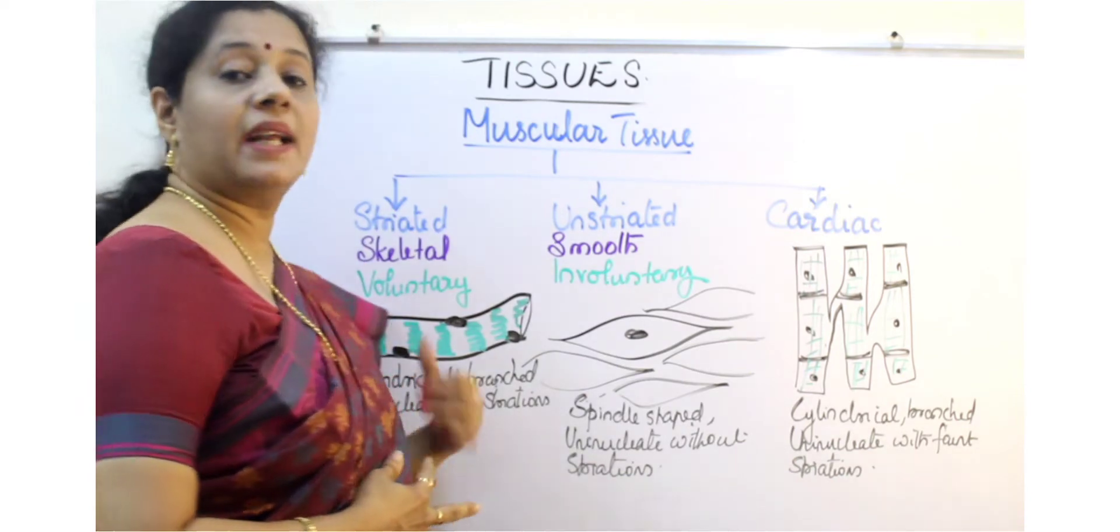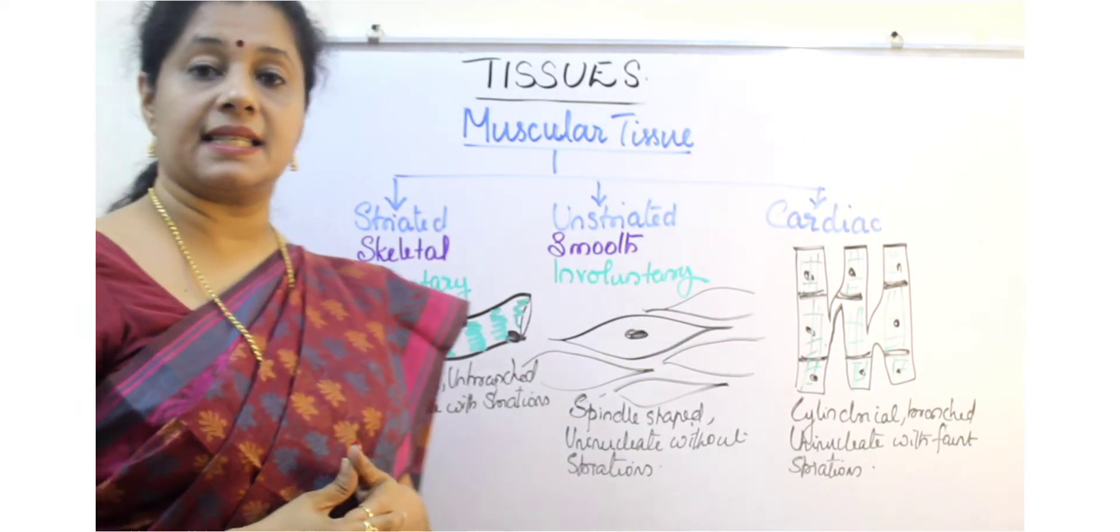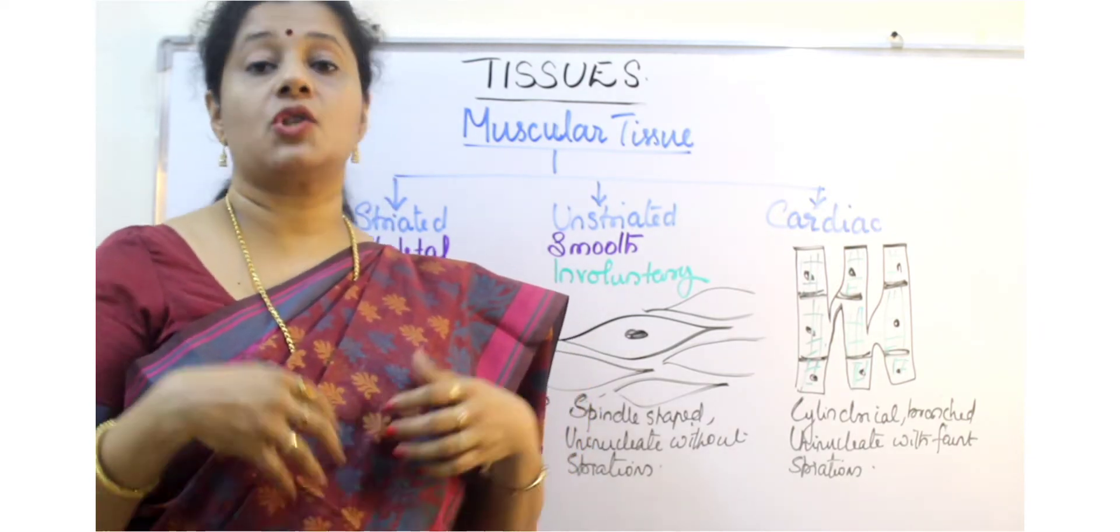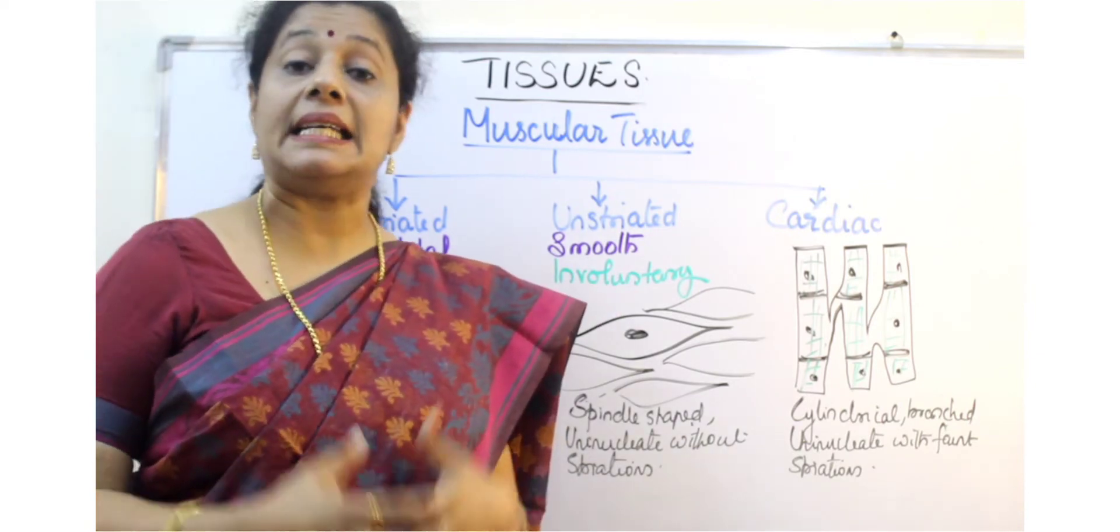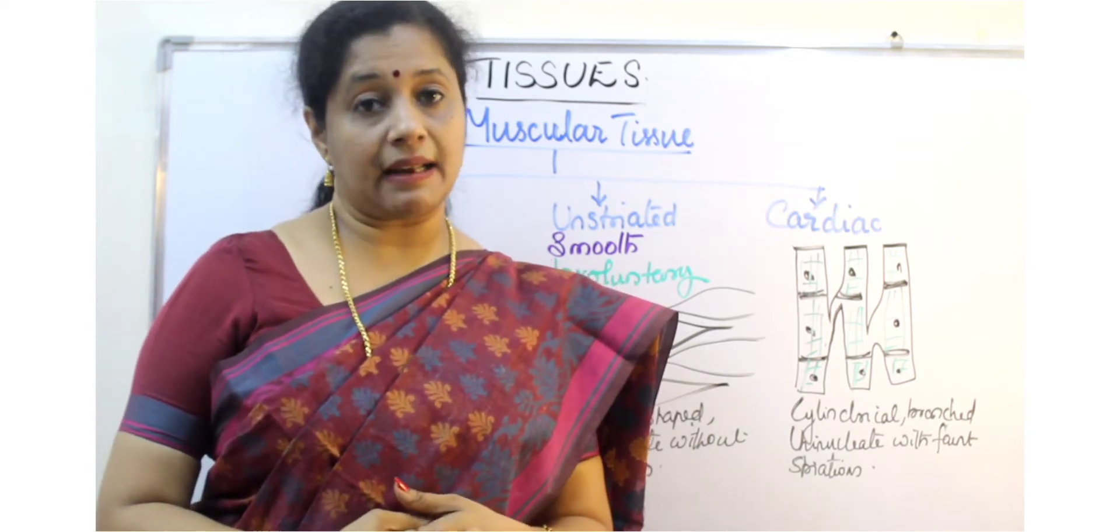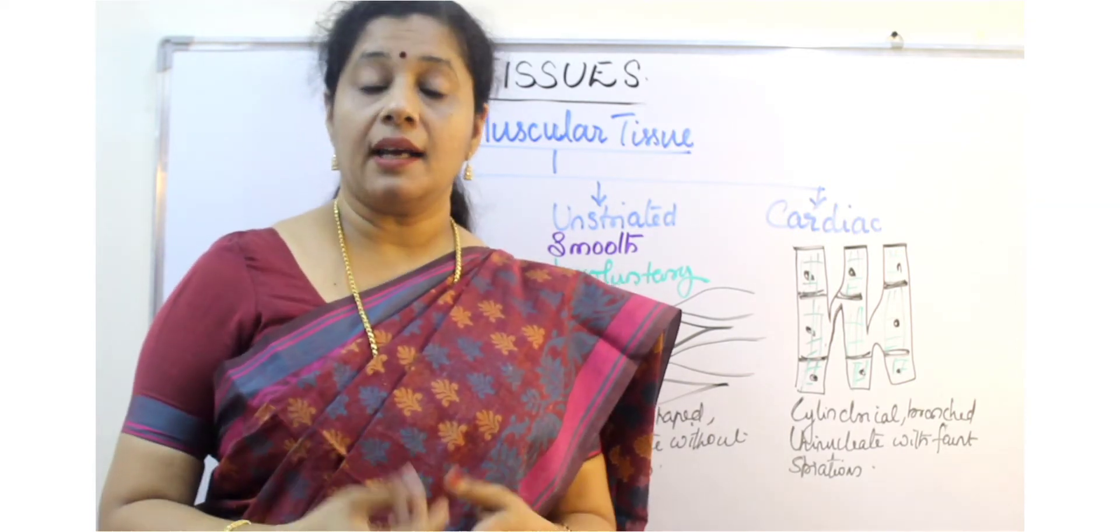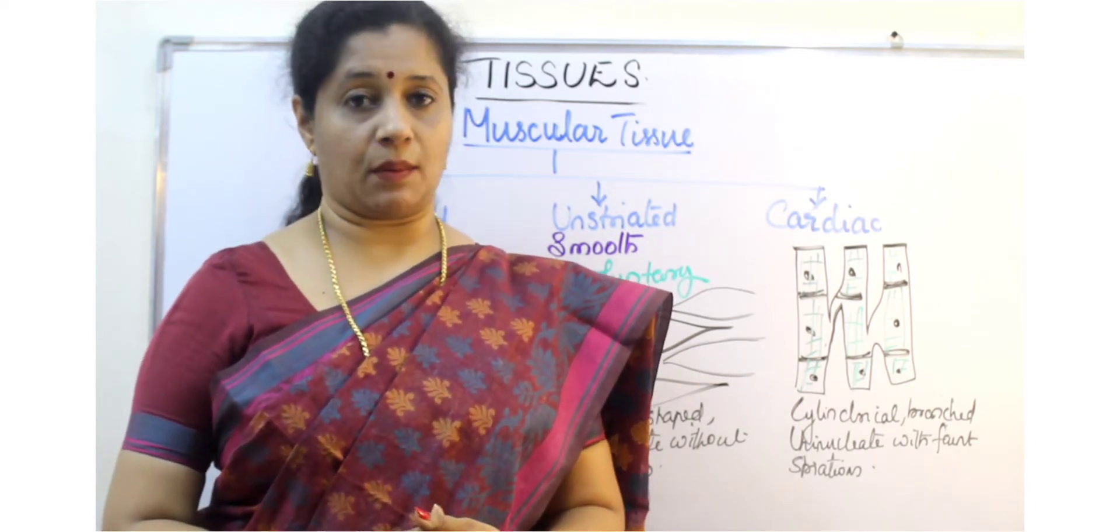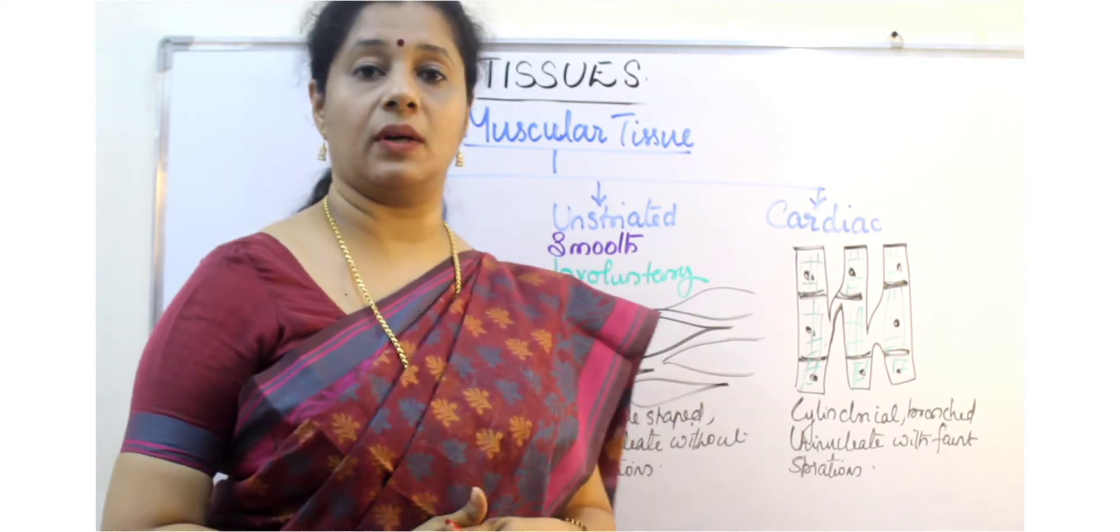Now we will discuss where we find them. These skeletal muscles are attached to the skeletal system. They are found basically in our arms and limbs so that we can move. Whereas involuntary muscles are present in the internal organs, forming the wall of the stomach and alimentary canal. They are present in our blood vessels, bronchi, ureters, and urinary bladder. Cardiac muscles are found only in the heart.